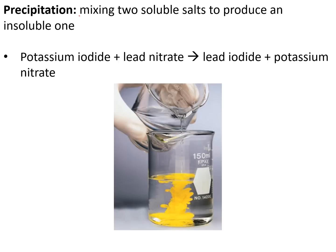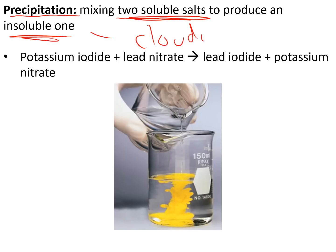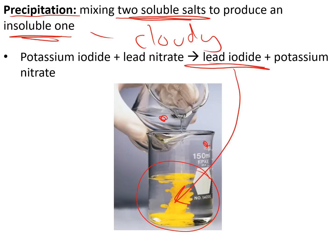A precipitation reaction is one in which mixing two solutions of soluble salts produces an insoluble one — you know it's happened because the solution goes cloudy. For example, potassium iodide and lead nitrate mixed together make lead iodide, which is a cloudy yellow precipitate, and potassium nitrate.